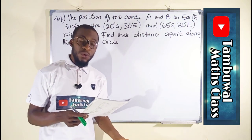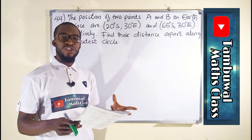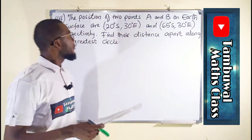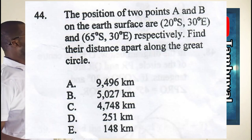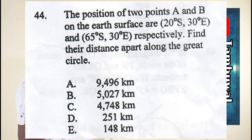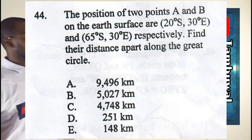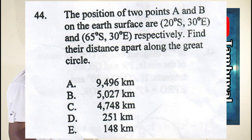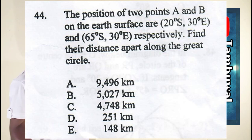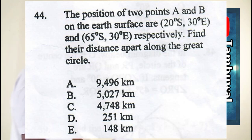Question number 44 is a question related to longitude and latitude. It says the position of two points A and B on the Earth's surface are: the first position is 20 degrees south and 30 degrees east for point A, and point B is 65 degrees south and 30 degrees east. We're asked to find their distance apart.